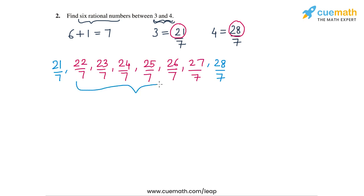So these 6 rational numbers lie between 21 by 7 (or 3) and 28 by 7 (or 4). By the way, there is nothing special about the denominator 7 — in fact any natural number greater than 7 will also work as the denominator. That completes this question using the two methods, and you can see that the second method is clearly faster in most cases.